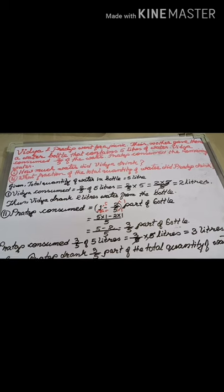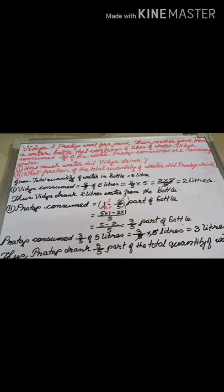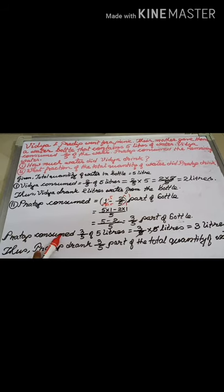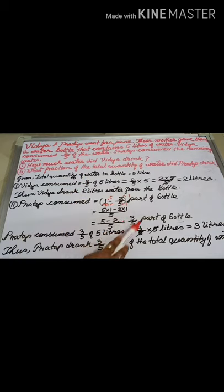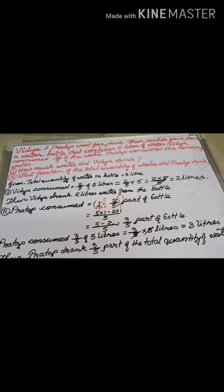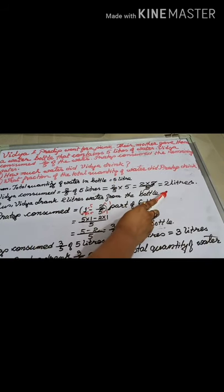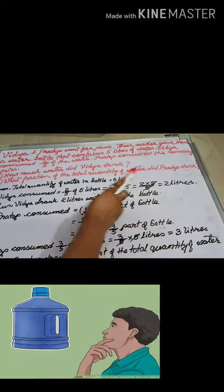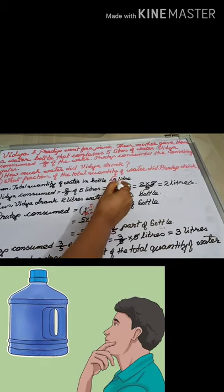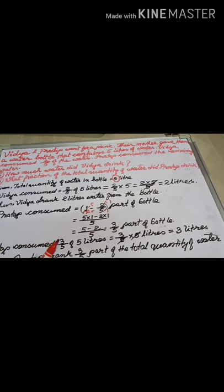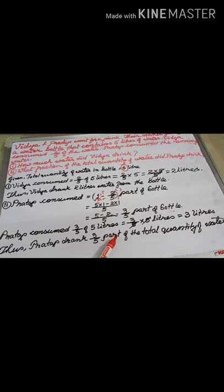If there is any confusion or you want to verify your answer, here is how: Vidya consumed 2/5 of the bottle, and we found Pradeep consumed 3/5 of the bottle. So 3/5 of 5 litres — the 5s cancel — gives 3 litres. Check: Vidya 2 litres plus Pradeep 3 litres equals 5 litres total. Your answer is correct. Thus, Pradeep drank 3/5 of the total quantity of water.